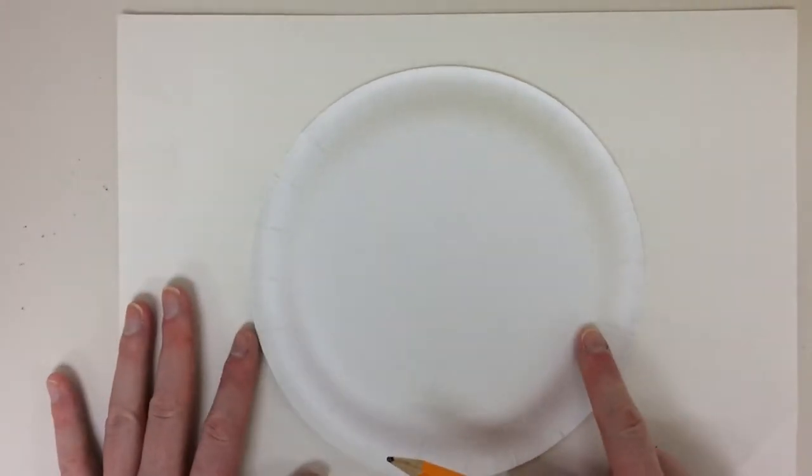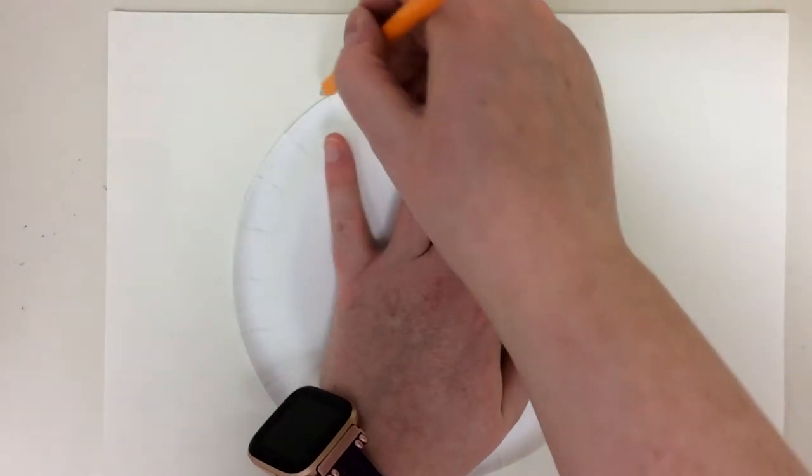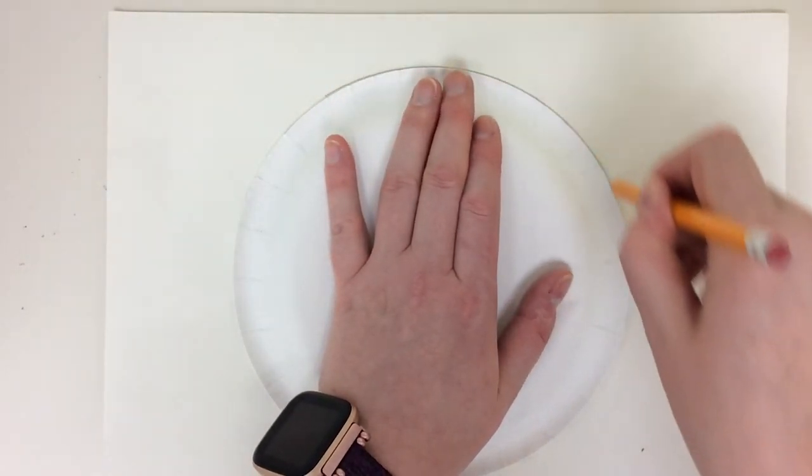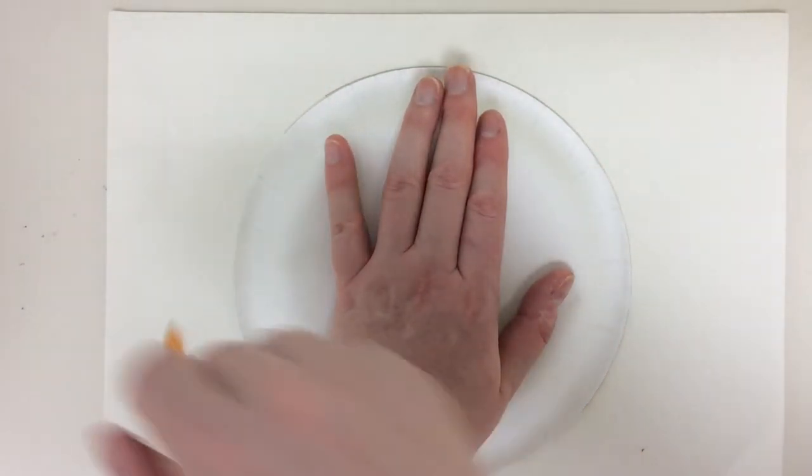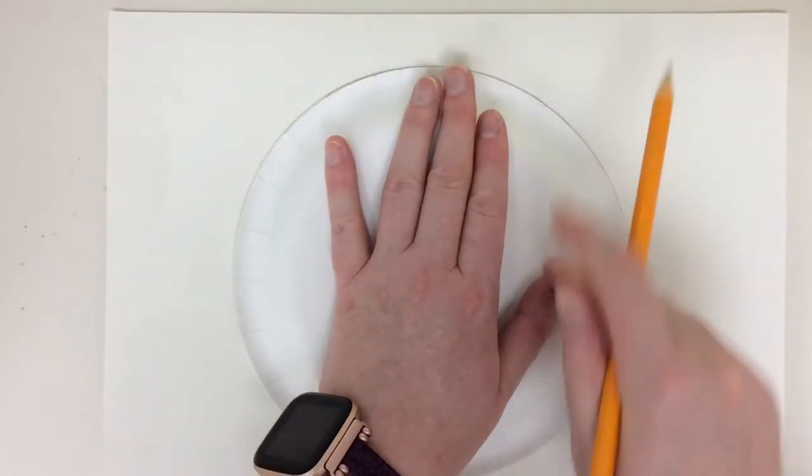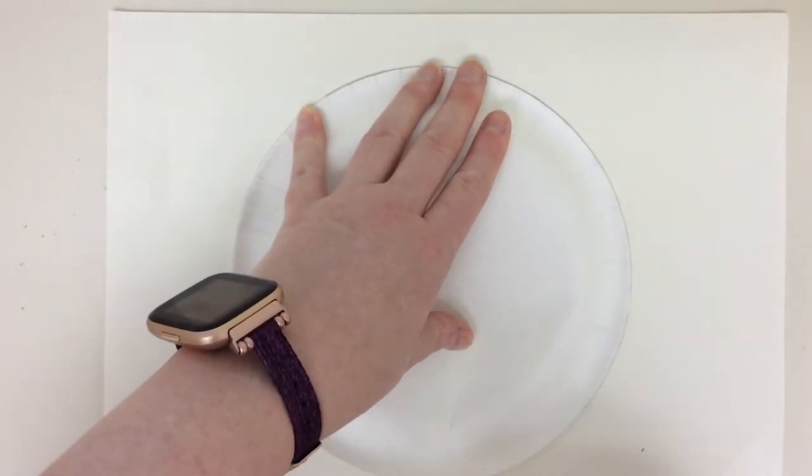So I'm ready to get started. I'm going to take my piece of paper and set it down, and then I'm going to flip my plate over and set it in the center of my paper. I'm going to hold with one hand and with the other hand I'm going to trace all the way around it. That way I have a nice circle to use for my planet Earth. Well that was easy.